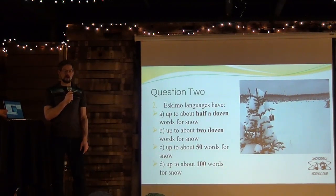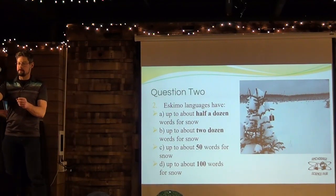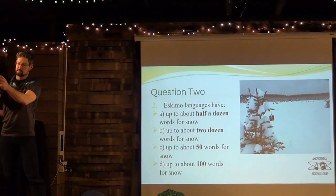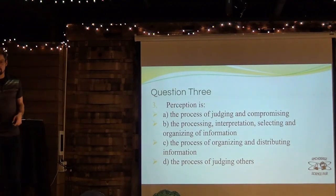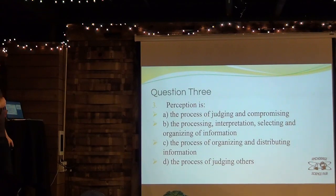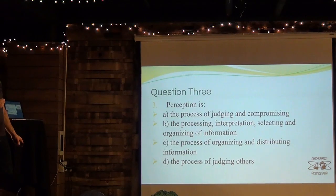The classic question is how many words are there for snow? Now, question three. Is it A, the processing, interpreting, selecting, and organizing of information; B, the process of organizing and distributing information; C — or D, the process of judging others?